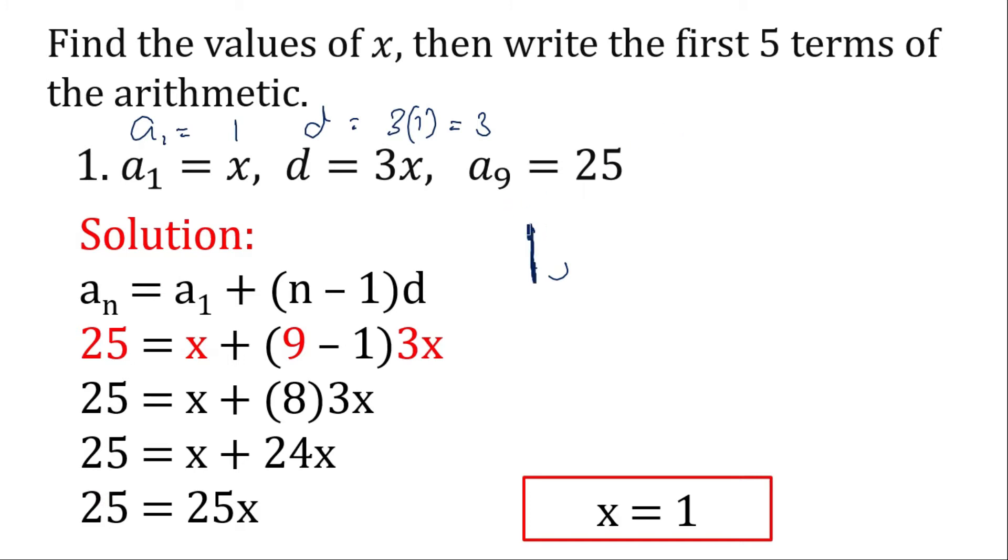A sub 1 is 1, 1 plus 3 is 4, 4 plus 3 is 7, 7 plus 3 is 10, then 10 plus 3 is 13.